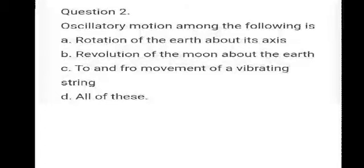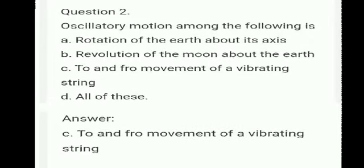Question number two: oscillatory motion among the following is — Option A: rotation of the earth about its axis. Option B: revolution of the moon around the earth. Option C: to and fro movement of a vibrating string. Option D: all of these. Answer: C, to and fro movement of a vibrating string.